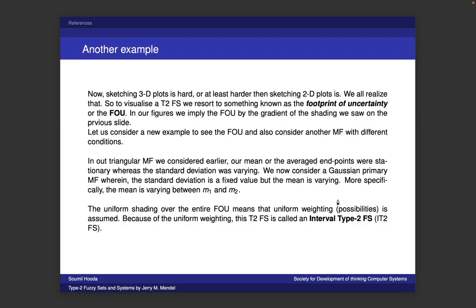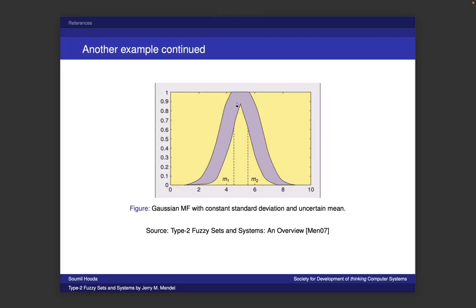That's how we use the concept of footprint of uncertainty to better model these type 2 fuzzy sets. If the shading inside the area is uniform — as in this case, the shade of pink is perfectly uniform all the way across the area — it means the set is an interval type 2 fuzzy set. That actually means there is an equal amount of weight to each membership function. Each membership function is equally likely to happen. This Gaussian membership function has a constant weight associated with each and every membership function inside it, which means it is an interval type 2 fuzzy set.